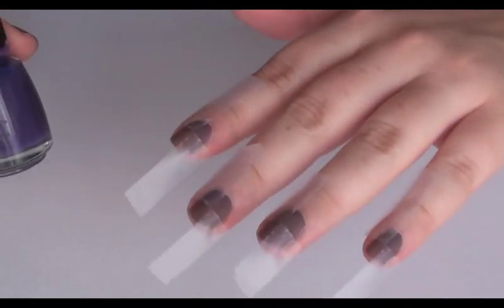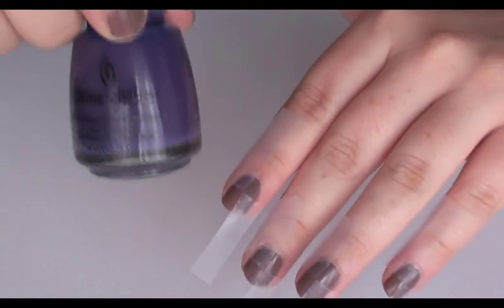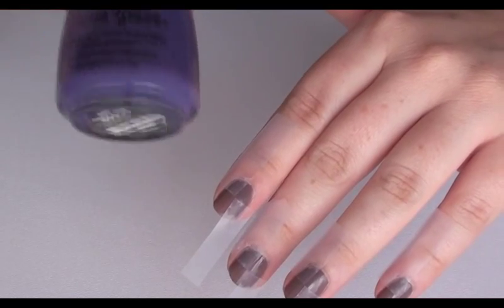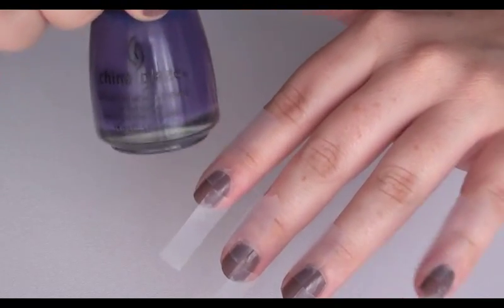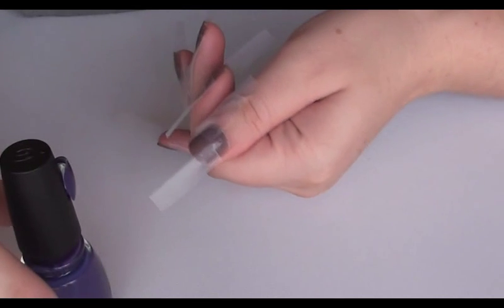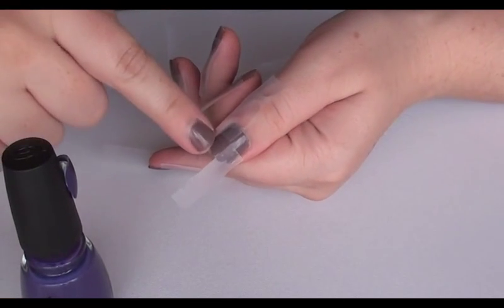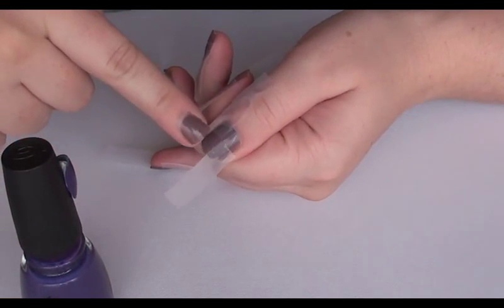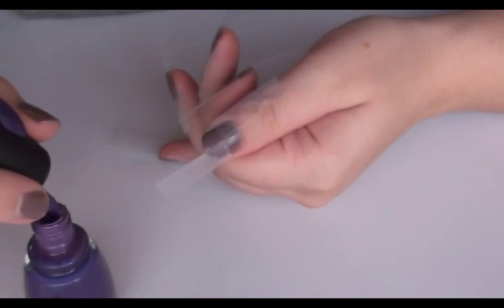So once the tape is on your hand, you can then get the second color. In this case, I've chosen Grape Pop by China Glaze. And then you're just going to paint over the parts that don't have sticky tape. You can paint over the sticky tape, it's not really going to matter.